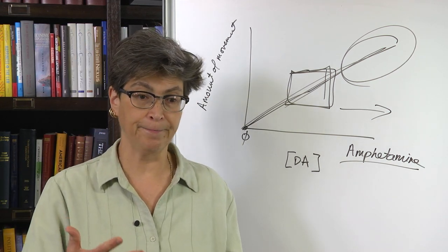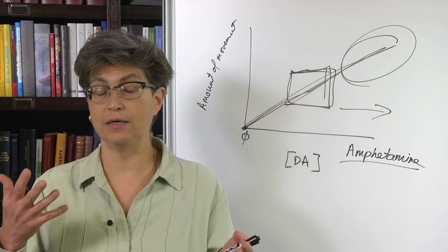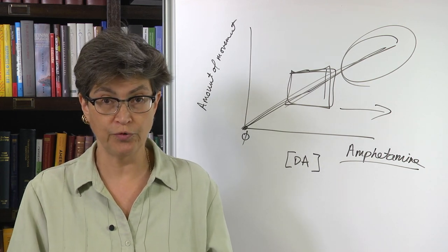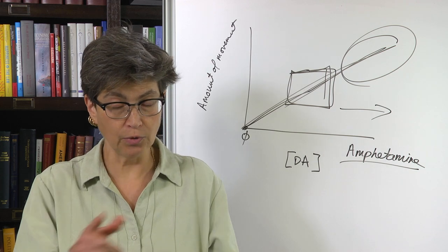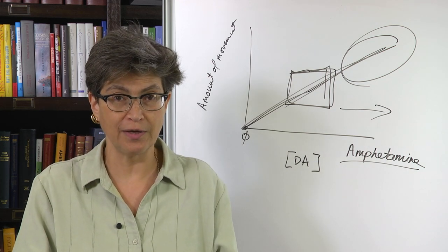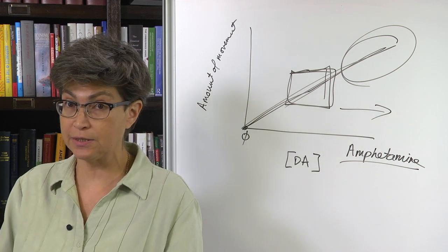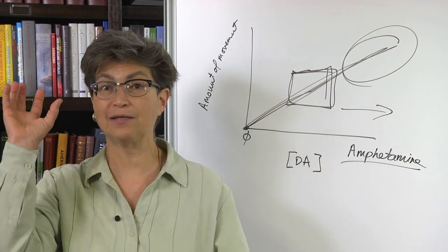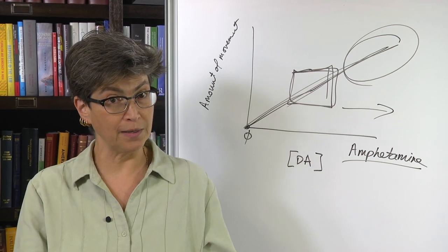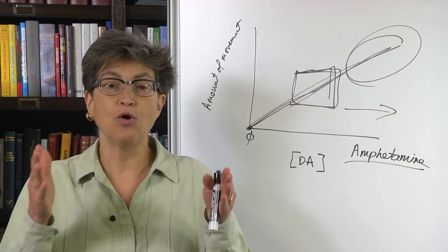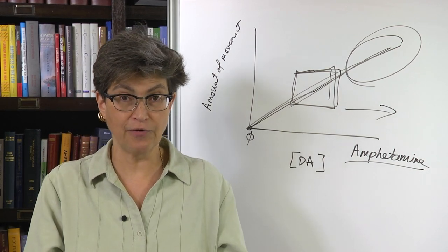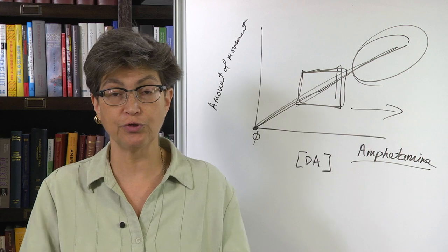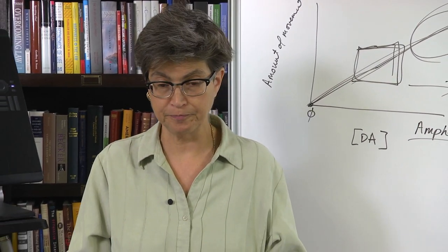There are certain movements that depend on the cerebellum and brainstem and spinal cord, but not on the basal ganglia. For example, a person who cannot move, who is akinetic, who's not moving because they have Parkinson's, if you toss them a ball, they reflexively, they automatically go up and catch that ball. That's a movement, but it is not a basal ganglia-supported movement. What dopamine is absolutely necessary for are these basal ganglia-supported movements. Getting up to go to the refrigerator to get something to eat, that's a basal ganglia-supported movement.